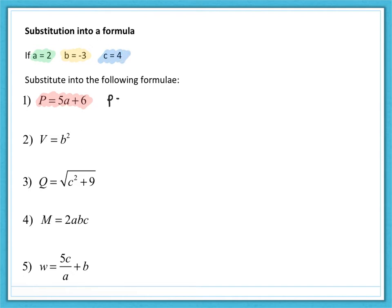Let's start with part one. We're working out p, which is five lots of a. So that's five lots of two plus a value of six. So that's 10 plus six or 16.